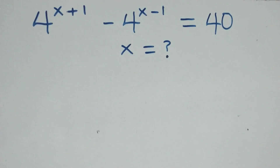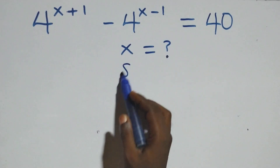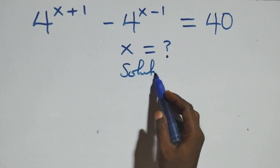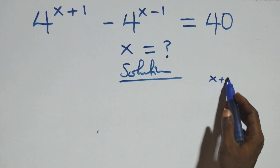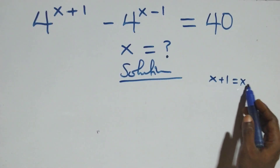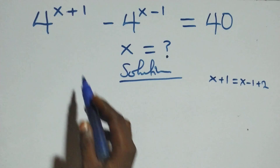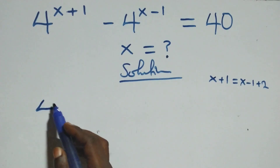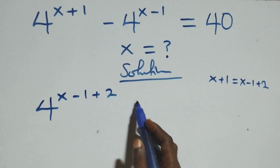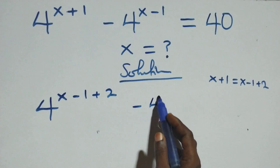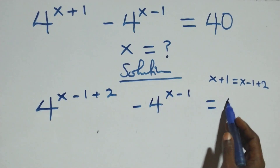Hello, welcome. We are solving a nice exponential equation. We rewrite x+1 as (x-1)+2, so the expression becomes 4 raised to the power (x-1)+2, minus 4 raised to the power (x-1), equals 40.